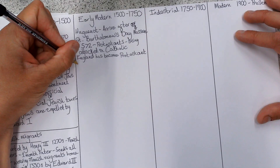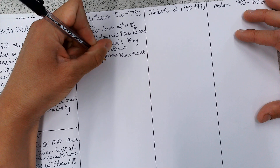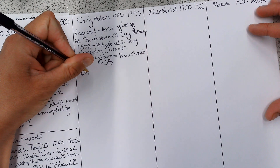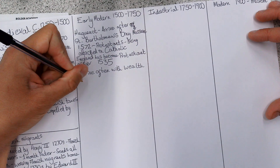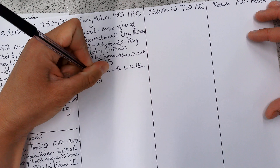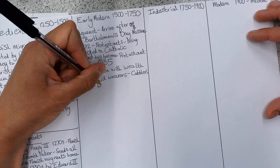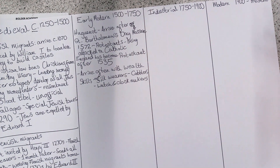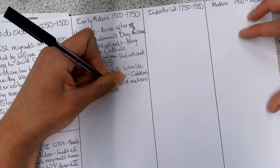The Huguenots often arrive with wealth and lots of skills. Lots of them were silk weavers; some were cobblers — cobblers make shoes; lots were watchmakers and clock makers; and all sorts of other trades. Generally speaking they're quite wealthy and arriving with skills which England needs or wants. That means they are very often very successful in England.